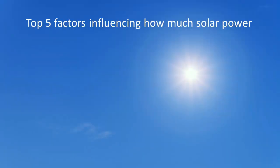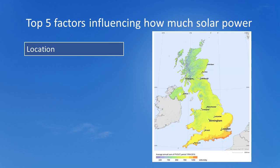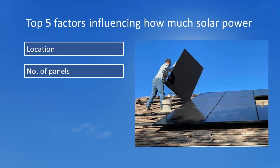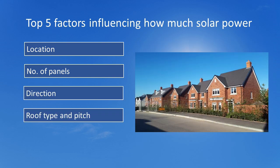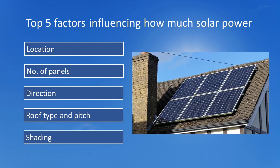So, to recap, the factors that will influence how much solar power generated electricity you are likely to produce are: location — where in the country you live; number of panels — the size of your solar panel array; direction — which way your panels face; roof type and pitch — the angle at which your panels face the sun; and shading — how much and how frequently your panels are in the shade.